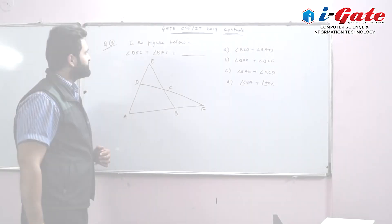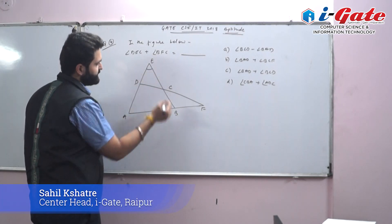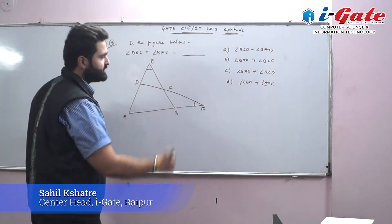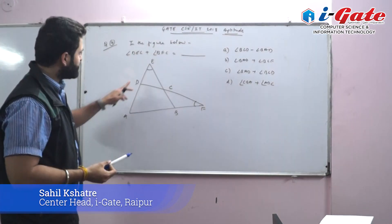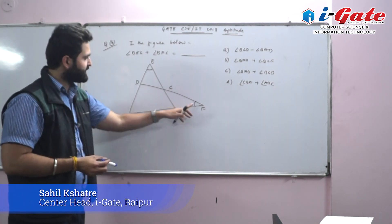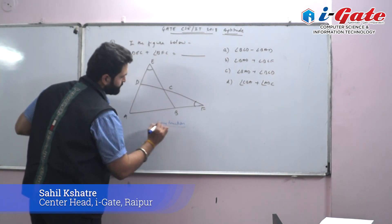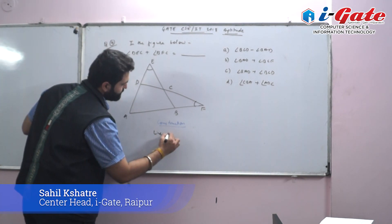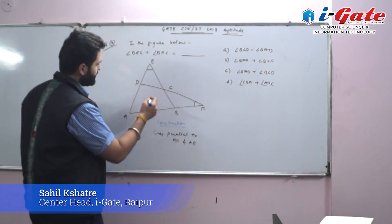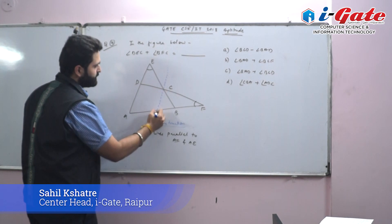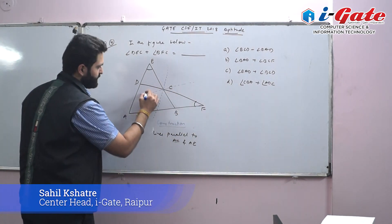Question 4: In the figure, find angle DEC + angle DFC in terms of angle BCD and angle BAD. To solve this, we make a construction — draw lines through the vertex parallel to lines AF and AE, since the angles involved are inclined with these lines.